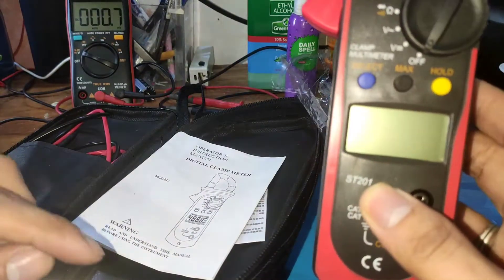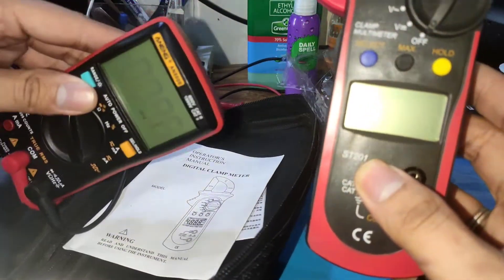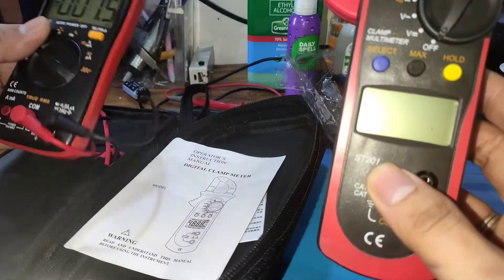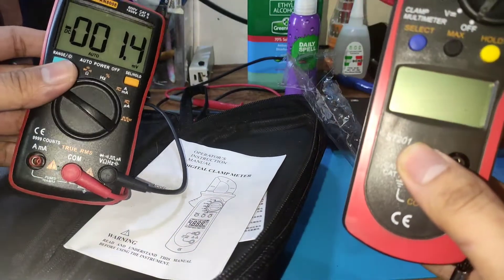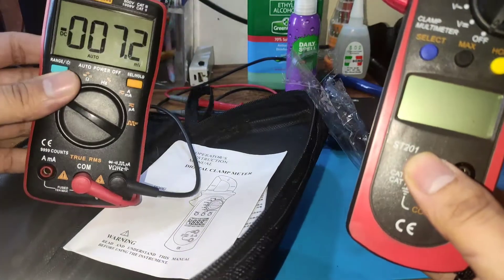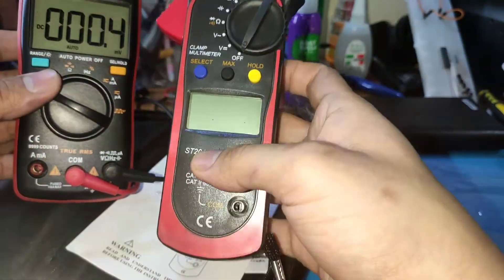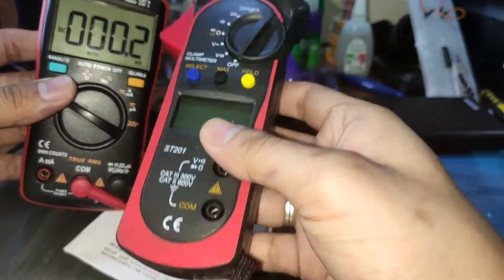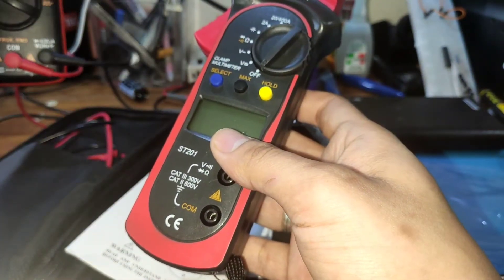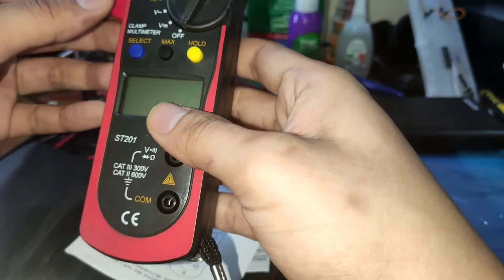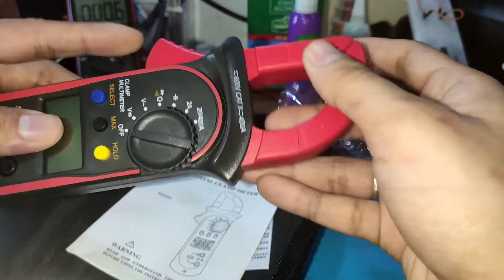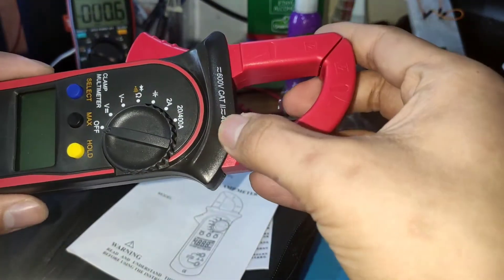We're going to compare this with the AN-808. This is the old multimeter that I have and it's having issues. That's why I bought this ST-201. But this doesn't have an AC or DC current function. It only has the AC current for 400 amps.